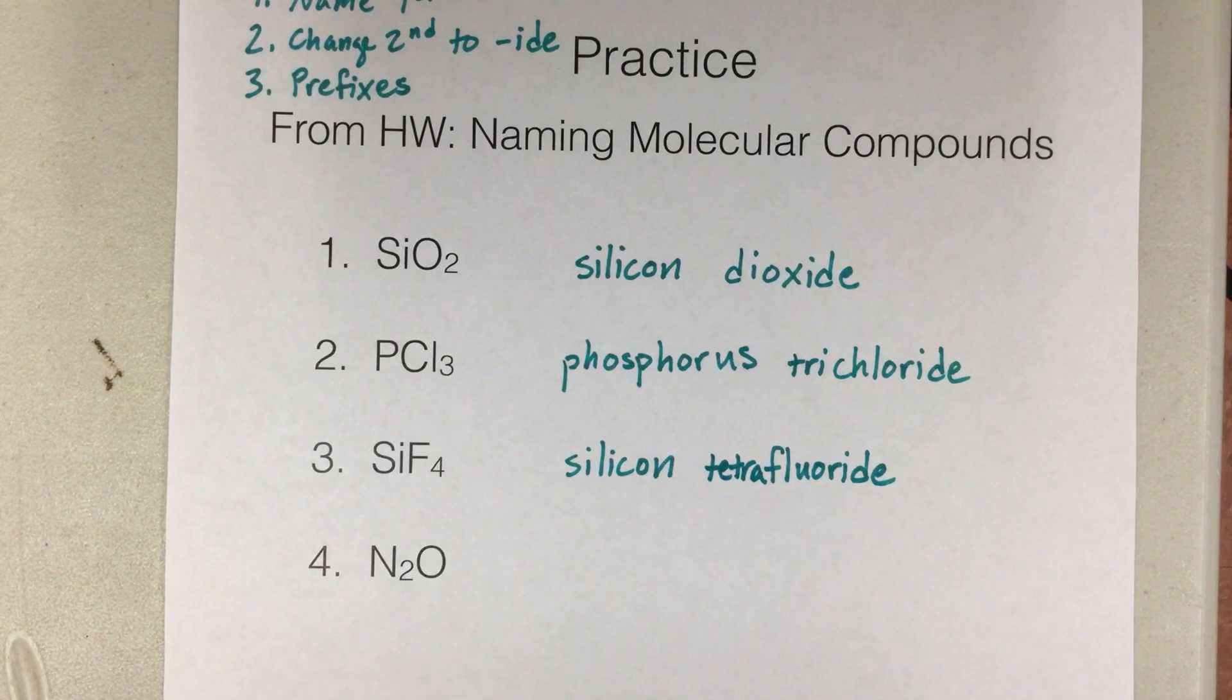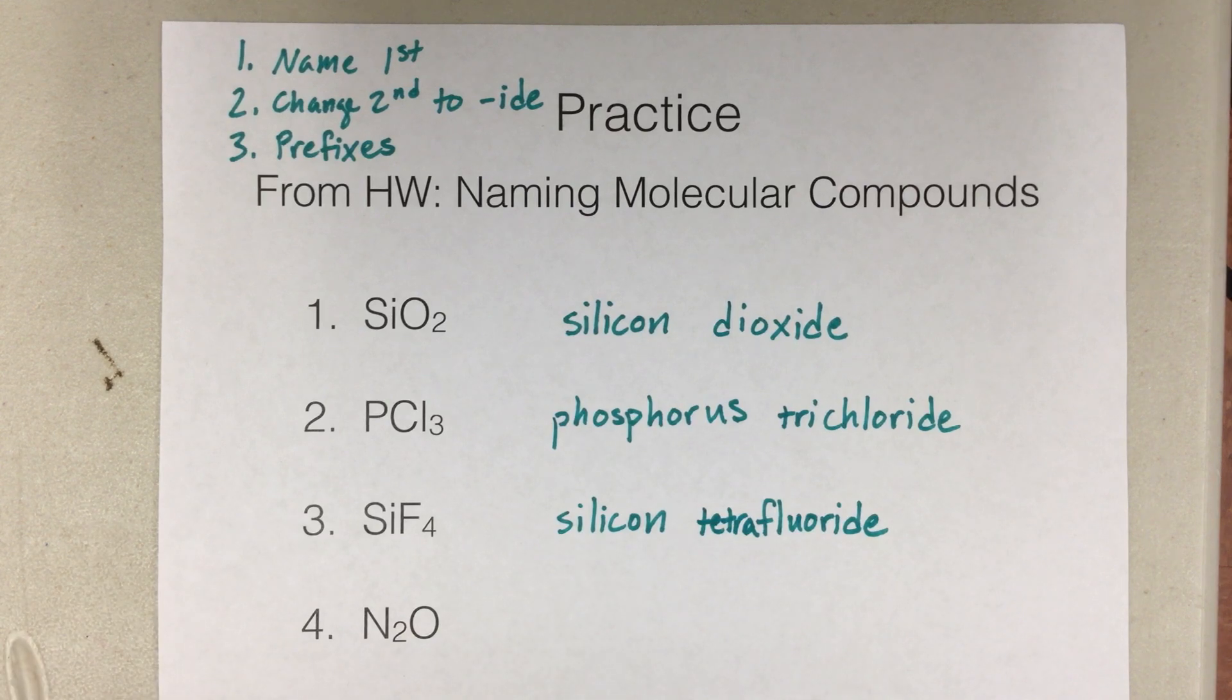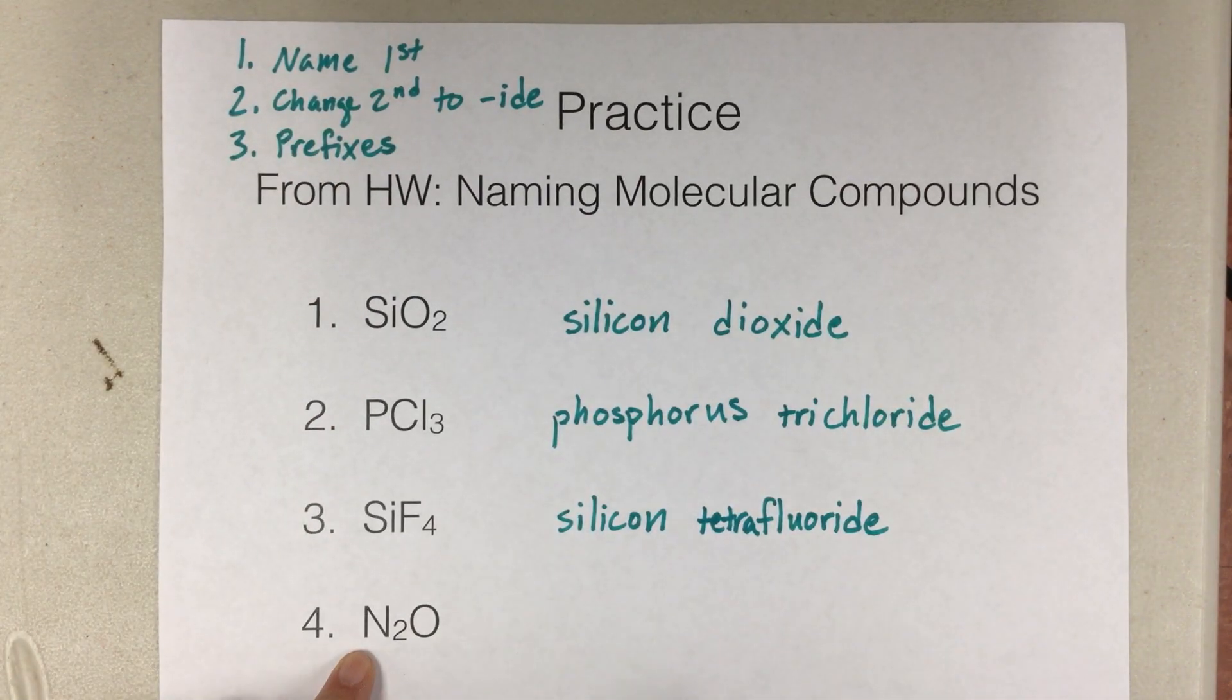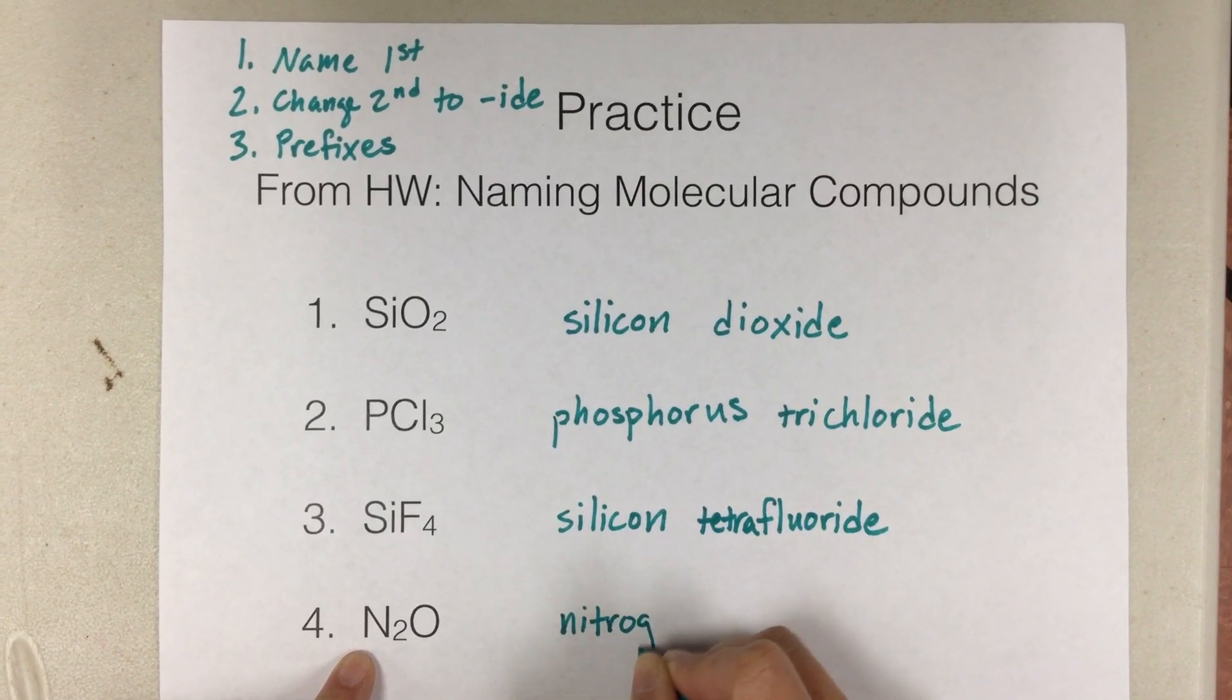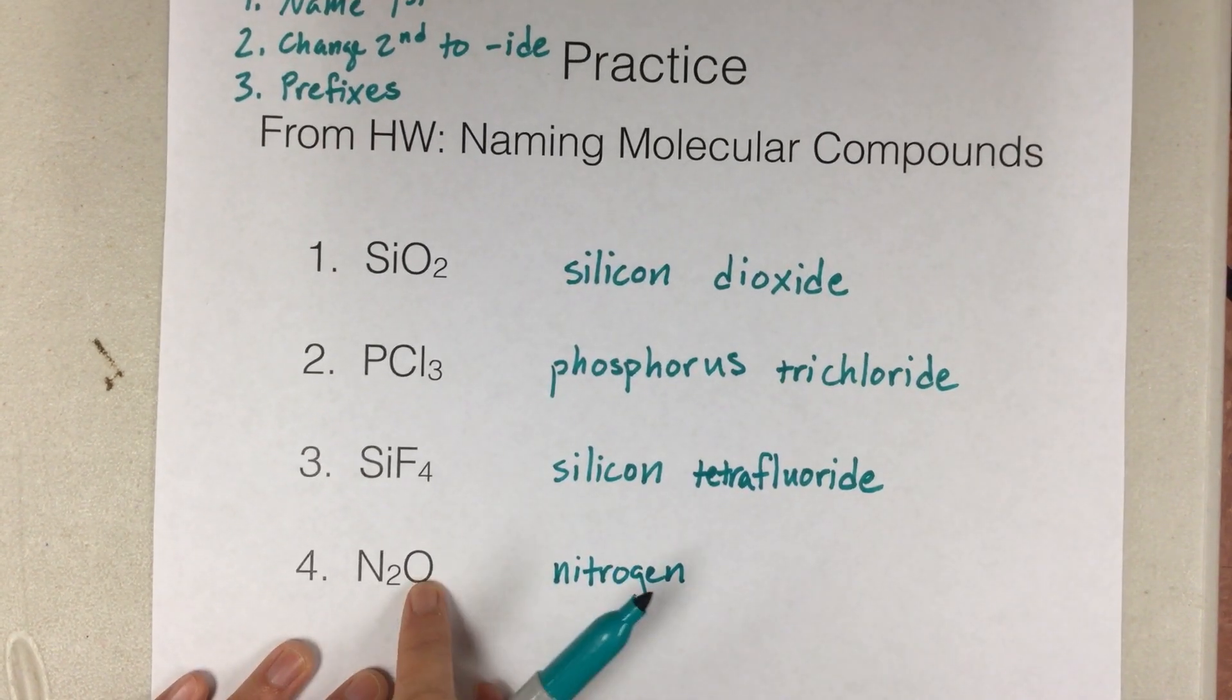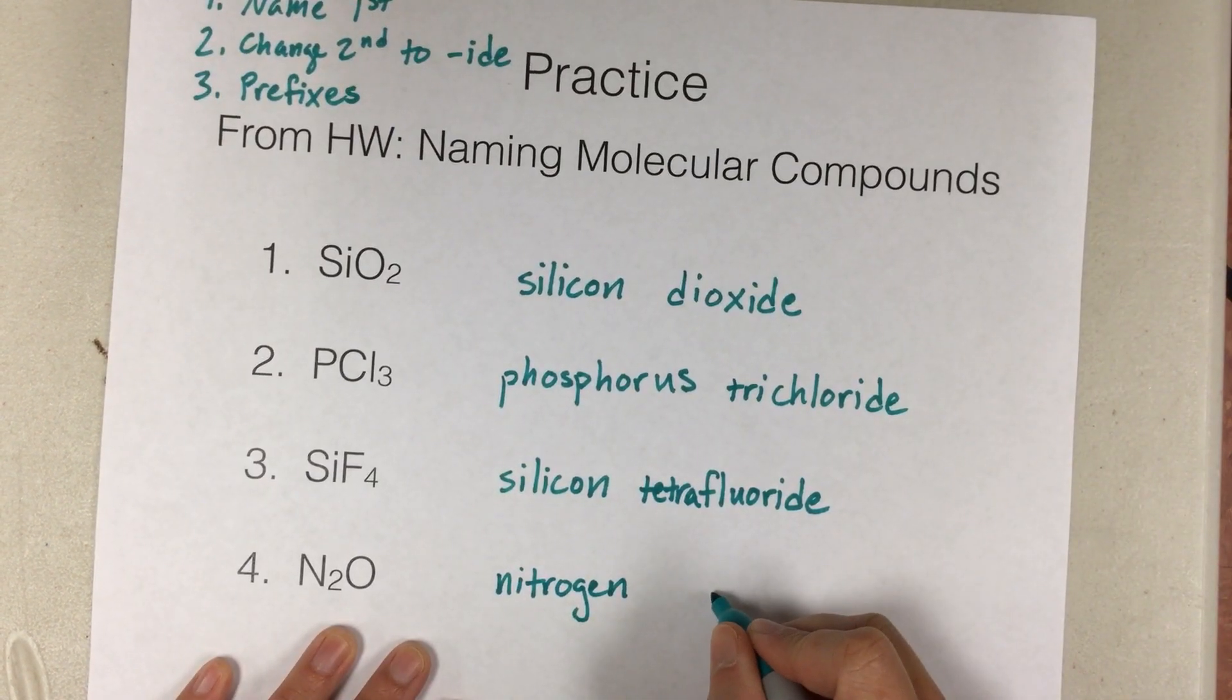All right, and then the last one here that we'll do, N2O. So we first need to name the first element. Nitrogen is N. And then the second element is oxygen. And we need to change the ending to -ide. So oxide.